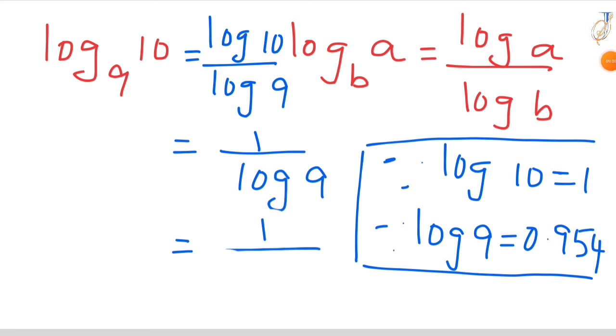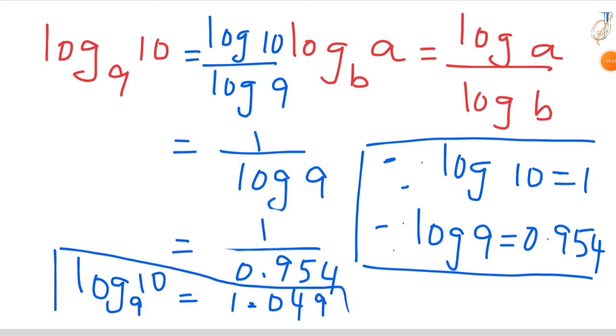1 by log 9 the value is 0.954. If you do division here, 1 by 0.954 the value is 1.049. So log 10 base 9 the value is 1.049.